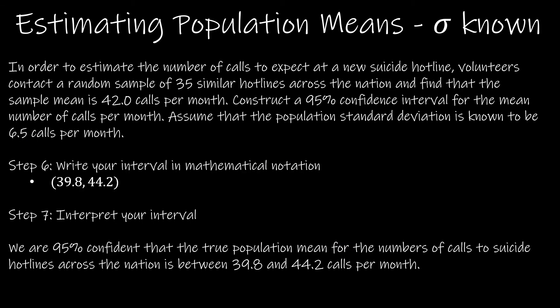Now, we should always write our interval in mathematical notation. And again, that just means the parentheses with a comma in between. One key thing here is it always goes from least to greatest. So this is a correct interval. But if I said 44.2, 39.8, that would be an incorrect interval. It has to go from least to greatest.